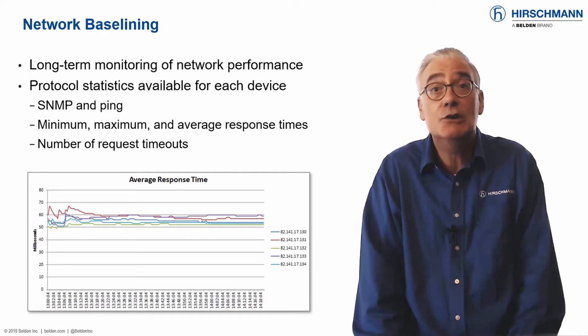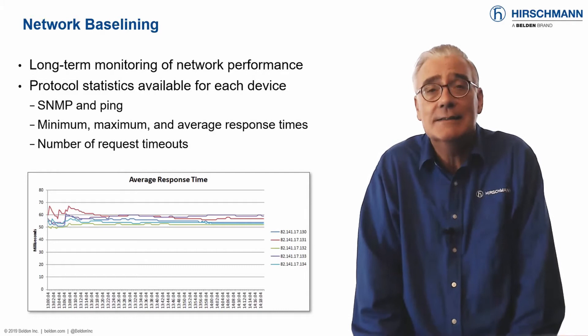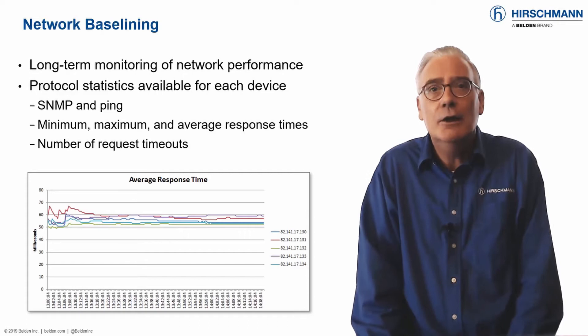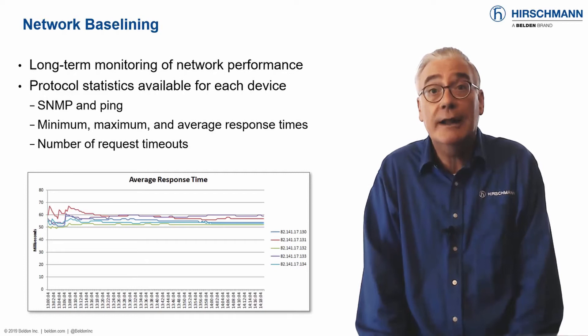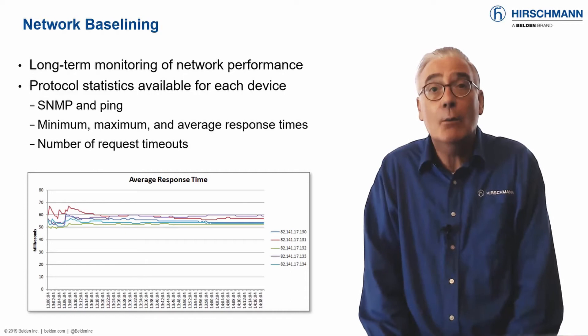Fluctuations in these values could indicate changes in network utilisation, or changes in the end devices — in other words, things that you need to know about. Your devices do not need to offer this information; Industrial HiVision will calculate it for you. Just select the devices you want to baseline, and you will be well on your way to having a deep understanding of your network's long-term performance.